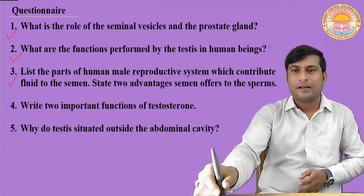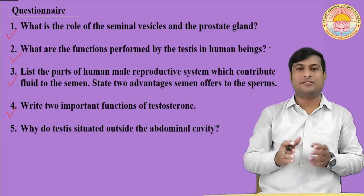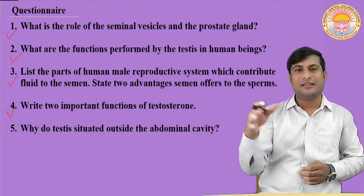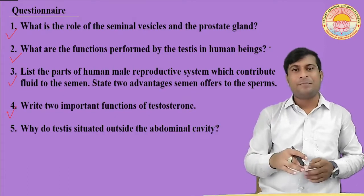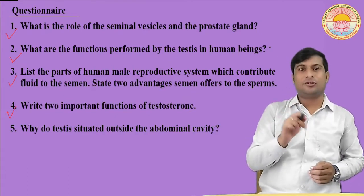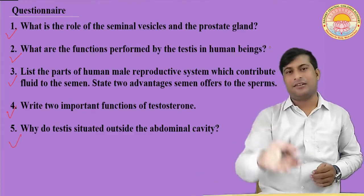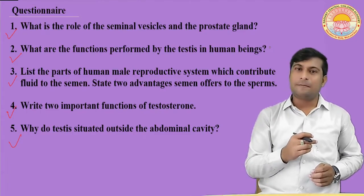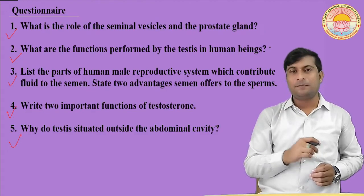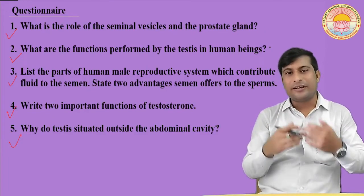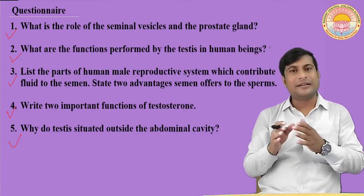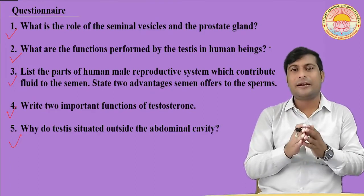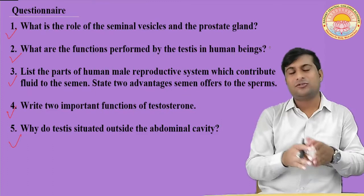Testosterone is responsible for secondary sexual characters and maturity in adult males. The last question: why are the testes situated outside the abdominal cavity? This is a very important question. The required temperature for the formation of sperm is lower than the body temperature. Body temperature is approximately 36 degrees, so sperm are formed at around 34 degrees, which is 2 to 3 degrees lower.